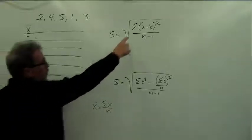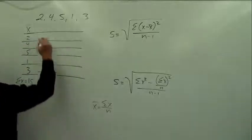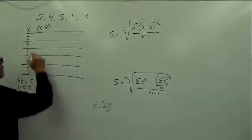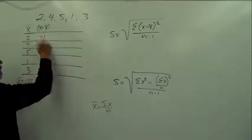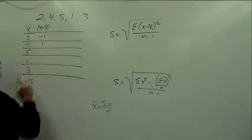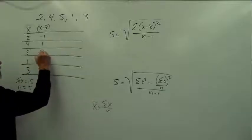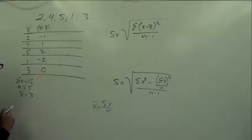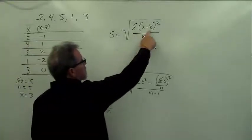Okay, now it says raw scores minus the mean. So we have to make this raw score minus the mean column like this. And we're going to do that. So it's just 2 minus 3, negative 1. 4 minus 3, 1. 5 minus 3, 2. 1 minus 3, negative 2. And 3 minus 3, 0. All right, so we have our raw scores minus the mean.